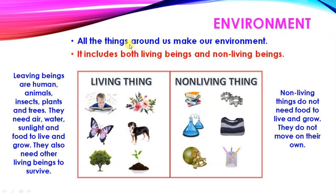Environment — all the things around us make our environment. It includes both living beings and non-living beings. Your friends, your teachers are living things, and pen, table, chair, pencil are all non-living things. Living beings are humans, animals, insects, plants and trees. All these are known as living things, as you can see in the picture.